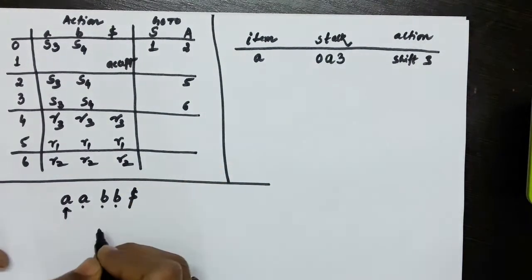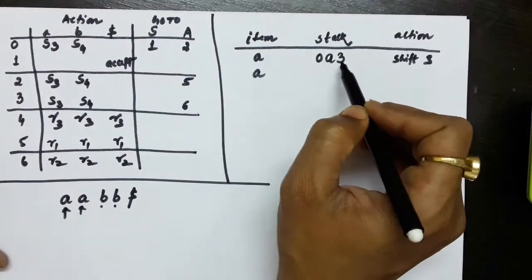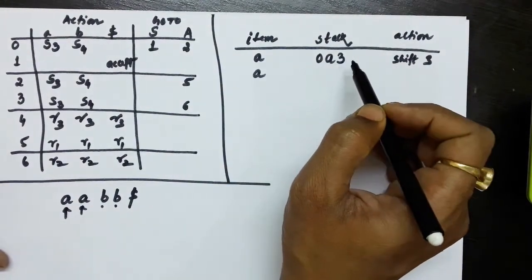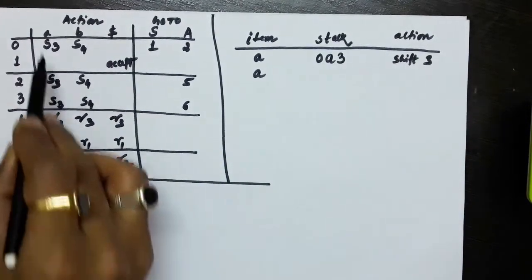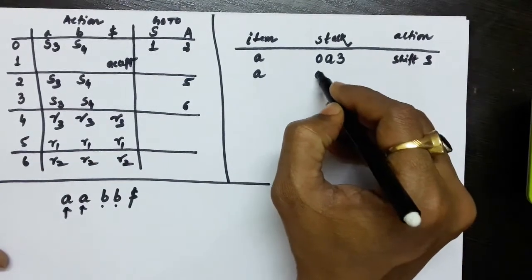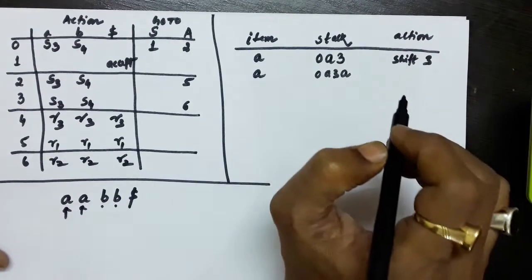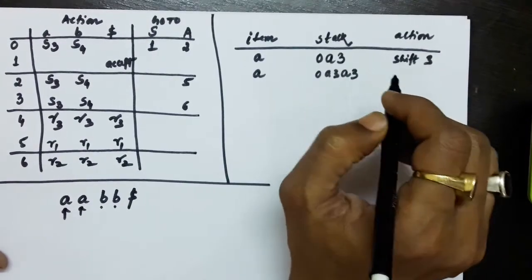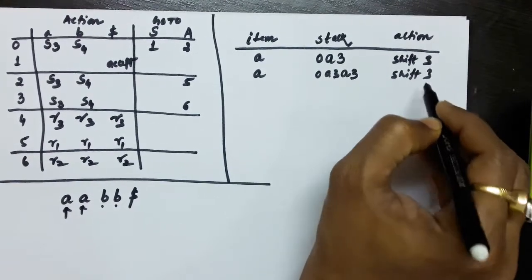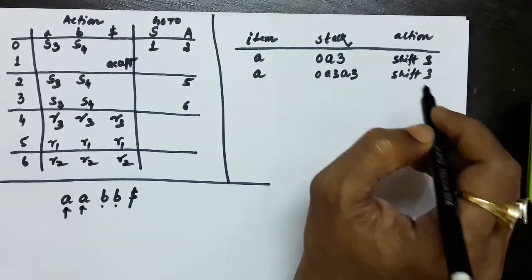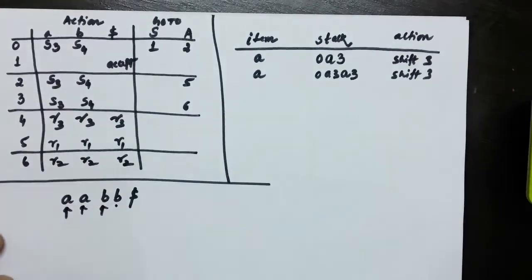The next symbol is small a again. So we look at state 3 with symbol a, which again suggests a shift. Zero, a, 3 was already on the stack; we push a again with rule 3 — so we apply S3 once more.